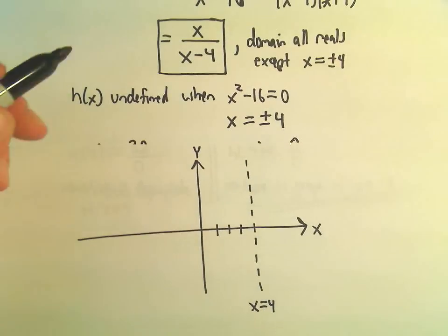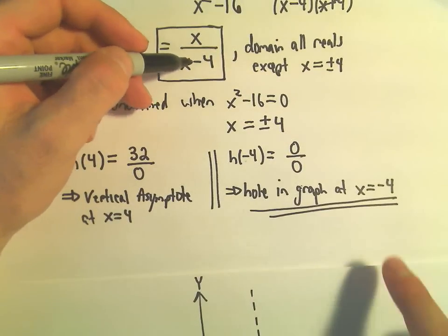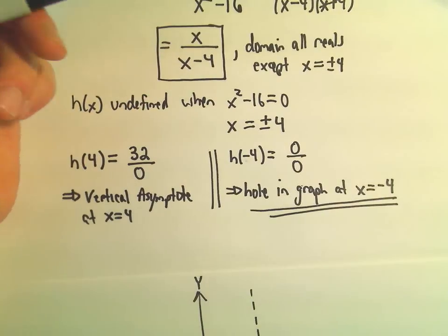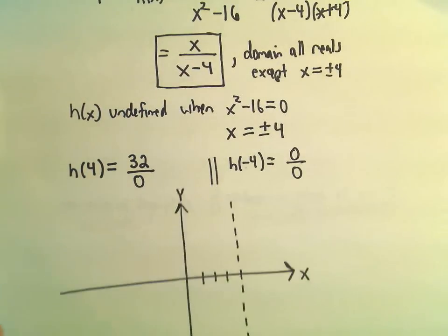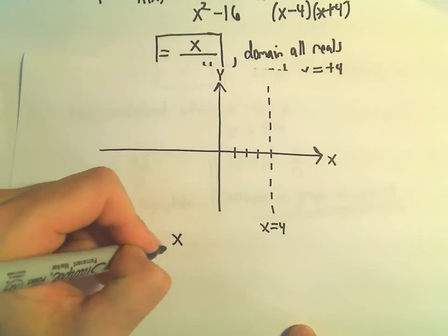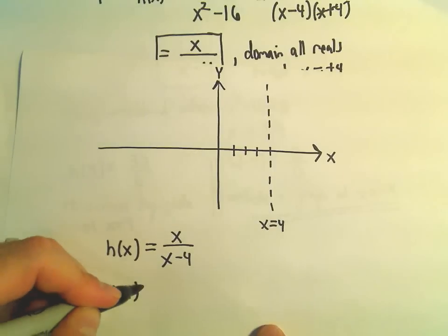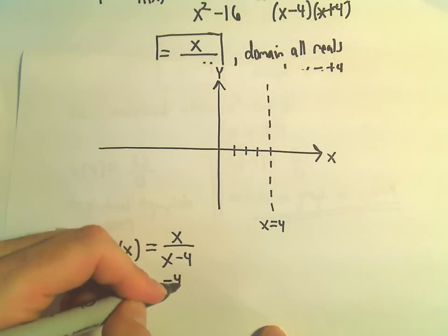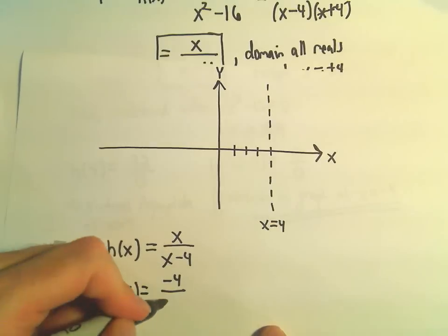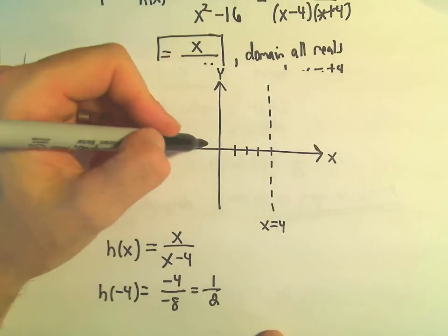Let's see, notice if we were to go back to this function x over x minus 4, if we plugged negative 4 in, I'm thinking about x over x minus 4. Notice if we plugged negative 4 in, well, we get negative 4 in the numerator. We get negative 4 minus 4. That's negative 8, which reduces to positive 1 half.